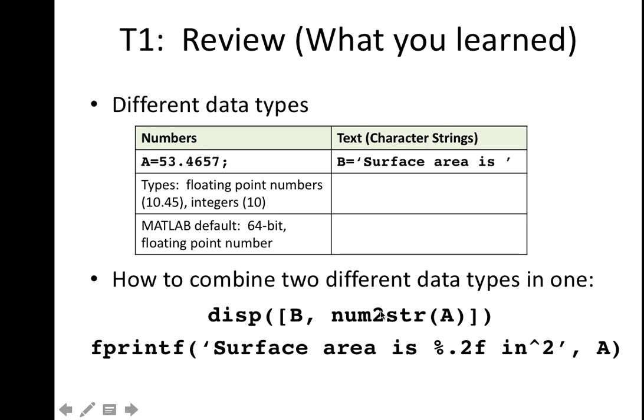But those are two different data types, and arrays don't allow mixed data types. So you have to convert the number into a string, and then if you combine them in an array using these square brackets, which we're going to talk about a lot today, with a comma in between, it allows them to be combined. So that's how disp works.